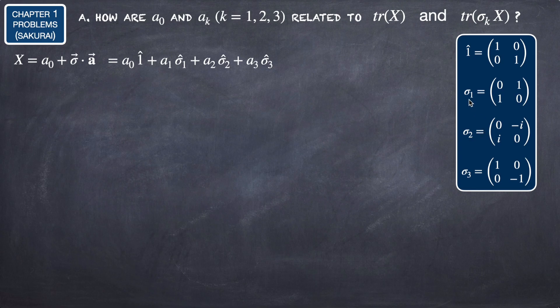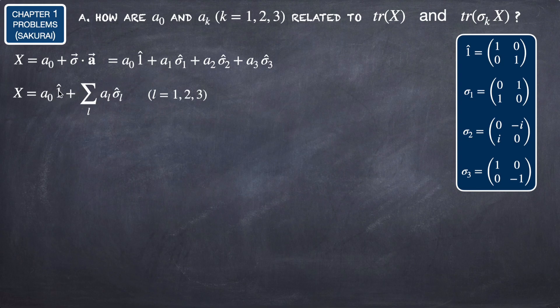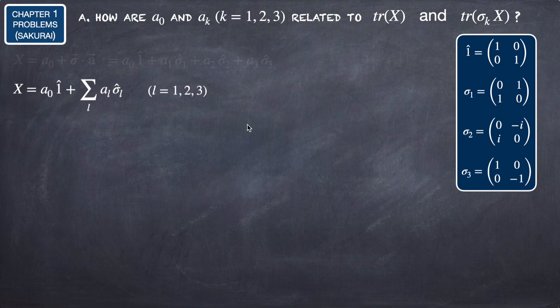You may prefer to write them as sigma_X, sigma_Y, and sigma_Z. Using index notation, we can write this as A0 times the identity plus a summation of A_L * sigma_L, with L equal to 1, 2, and 3.